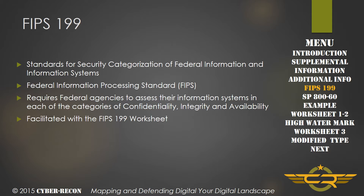FIPS 199 is the Standards for Security Categorization of Federal Information and Information Systems. FIPS itself stands for Federal Information Processing Standards. It requires federal agencies to assess their information systems in each of the categories of confidentiality, integrity, and availability — what we call the CIA triad. This task is really facilitated with the FIPS 199 worksheet that's available on cyberrecon.com.